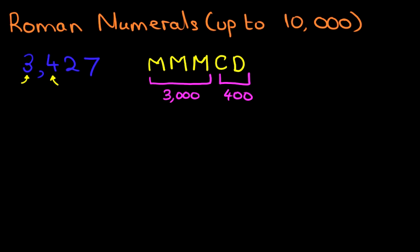What do we have next? We've got 20. How do we write 20? XX. So that's 20. And lastly, we've got the 7. How do we write 7? V is 5, 6, 7.